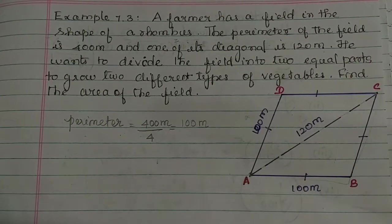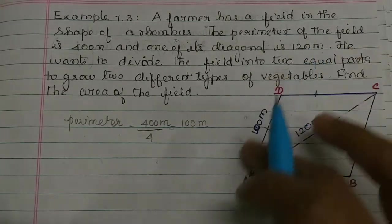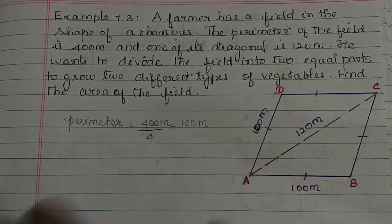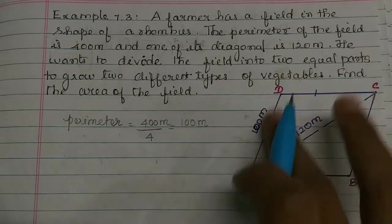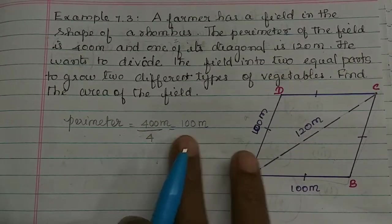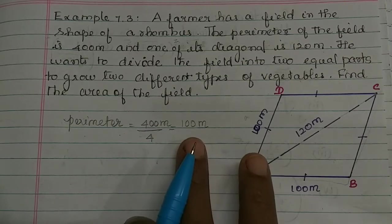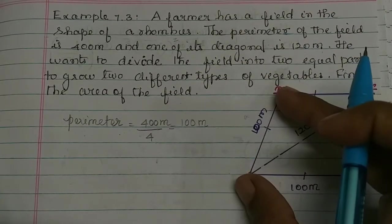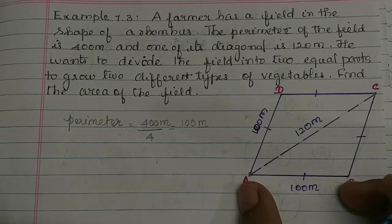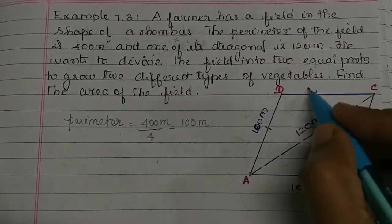The perimeter of the rhombus adds all four sides. Now we have 4 sides, each one side is 100 meters. This side is 100 meters, this is 100 meters, this is 100 meters, and this side is also 100 meters.